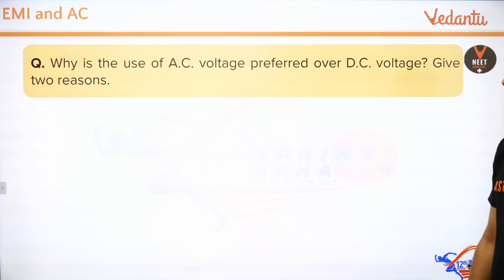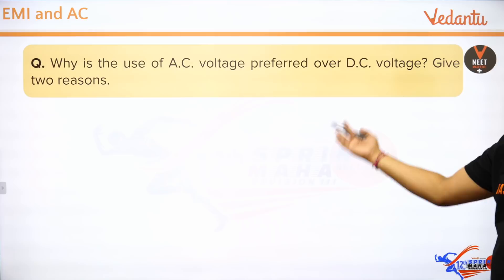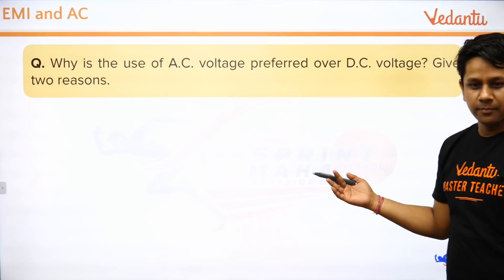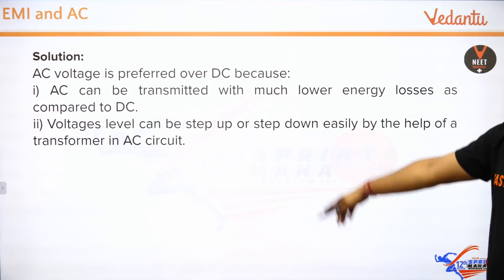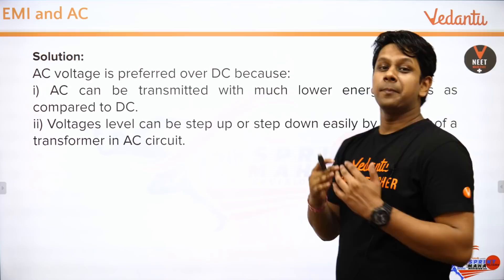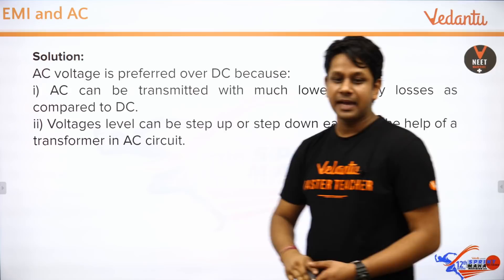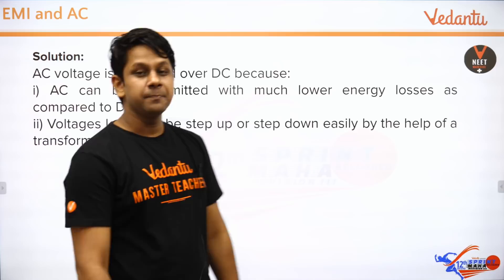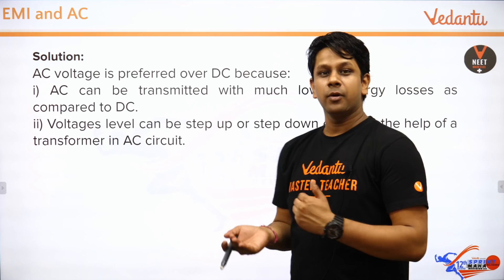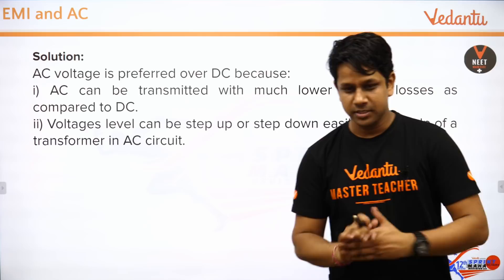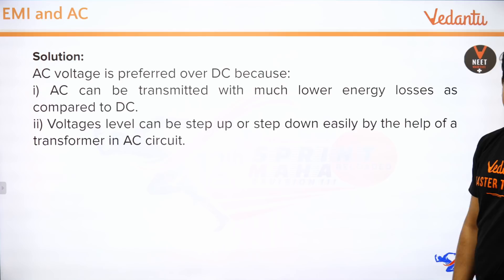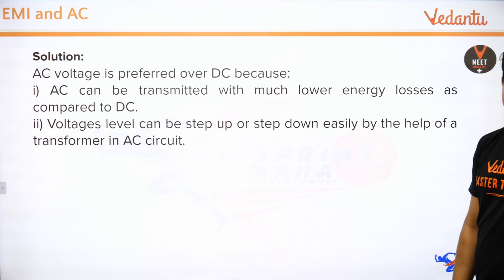Why is AC voltage preferred over DC voltage? Two reasons: First, when AC is transmitted over long distances, there is much lower energy loss. Second, we can easily step up or step down the voltage using a transformer, which is not possible with DC, because transformers work on mutual inductance, which requires a changing current — as AC provides.